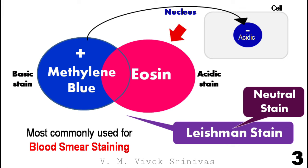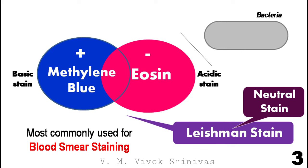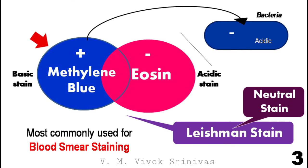And eosin is an acidic stain and is negatively charged, having high affinity for the basic components — that is, the positively charged structures of the cell, like the cytoplasm and the granules in some cells. The bacteria have mostly acidic components, that is, they are negatively charged. So they have high affinity for the basic stain — the positively charged stains like methylene blue. So the bacteria appear deep blue on Leishman staining.